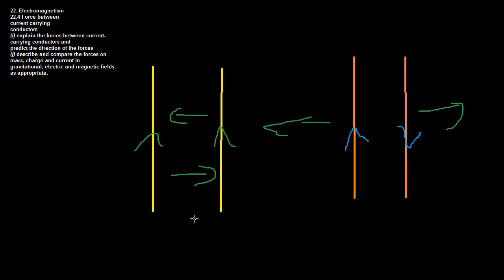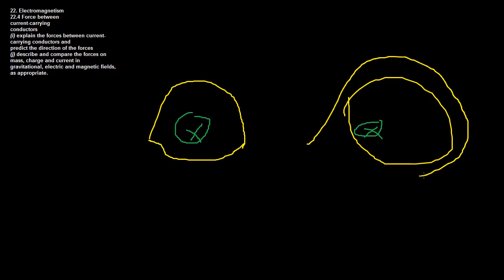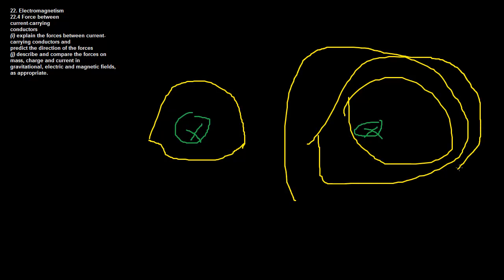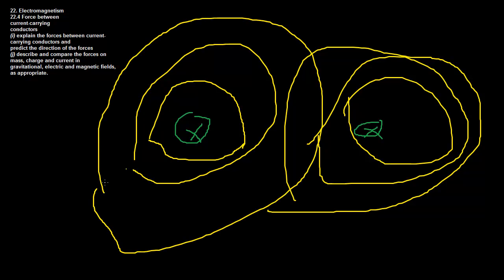Looking at same-direction currents from a top-down view, using arrow notation with both currents going into the page, if you apply the right-hand grip rule — thumb pointing into the page — the magnetic field moves clockwise, forming concentric circles around each wire. Magnetic fields theoretically extend forever, so all of these field lines are clockwise.